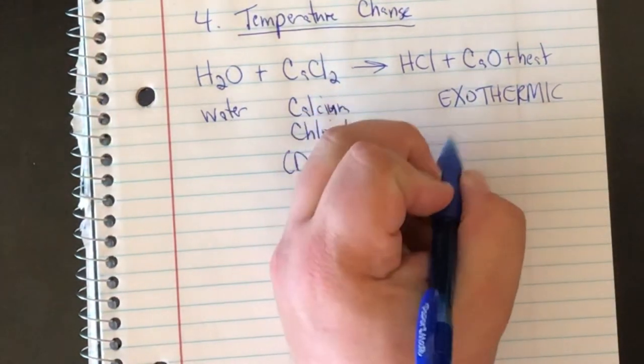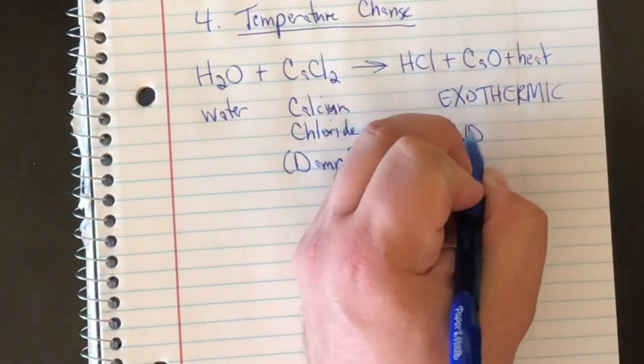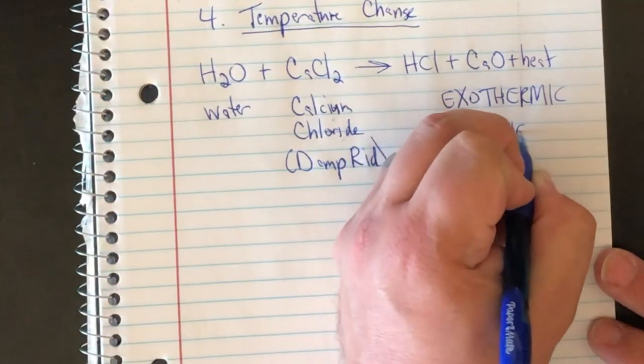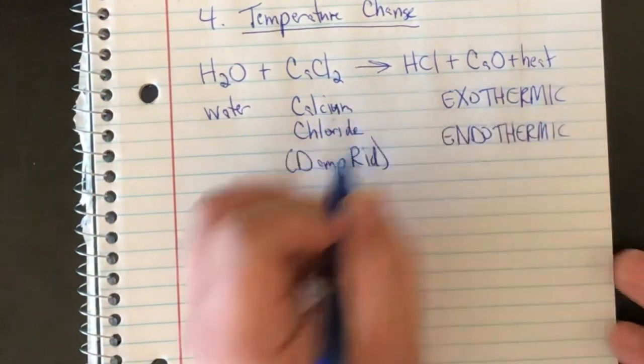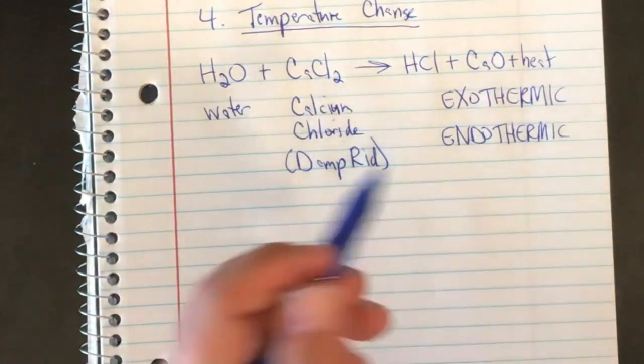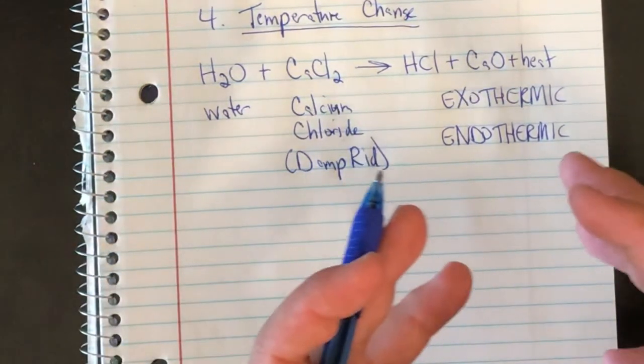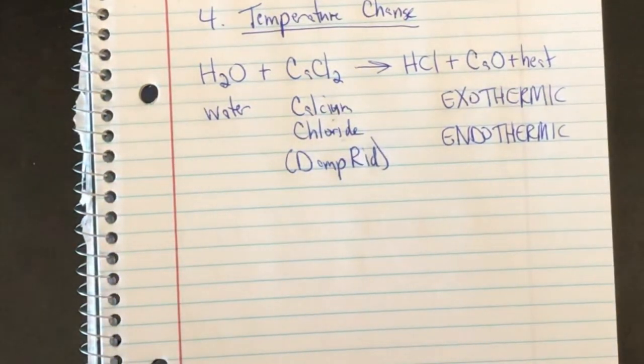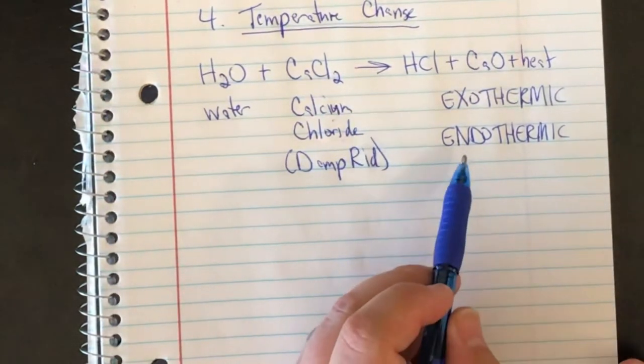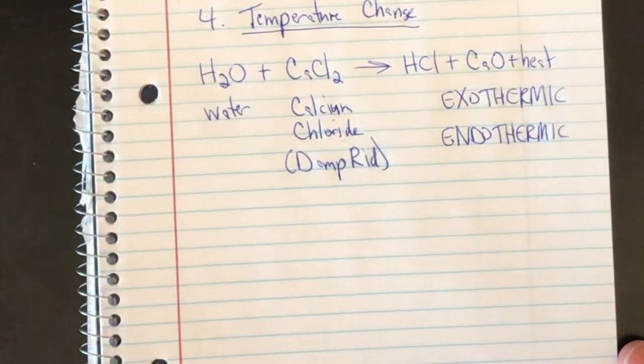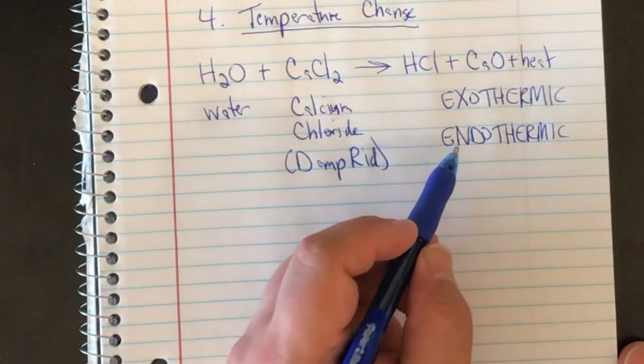The opposite of exothermic is endothermic. Endothermic reactions pull in heat from the area around it, causing the environment to cool down. And actually, the reaction that we did previously, baking soda and vinegar, is endothermic.